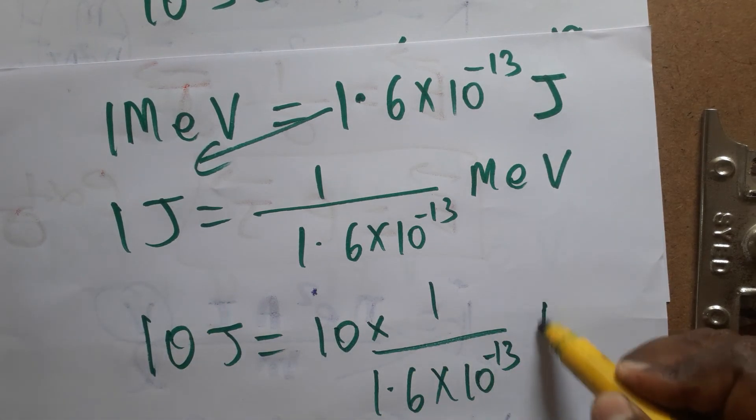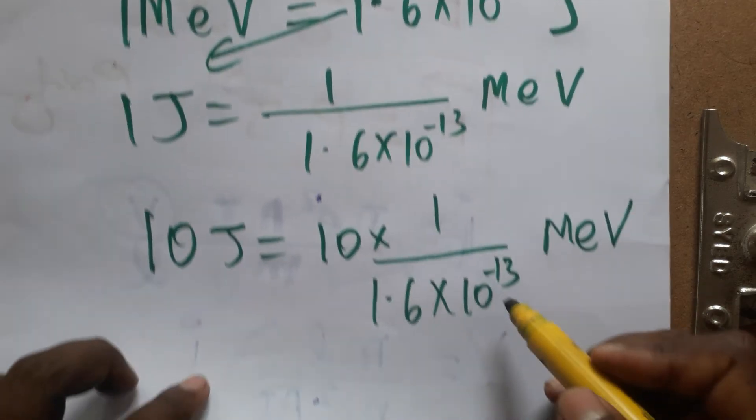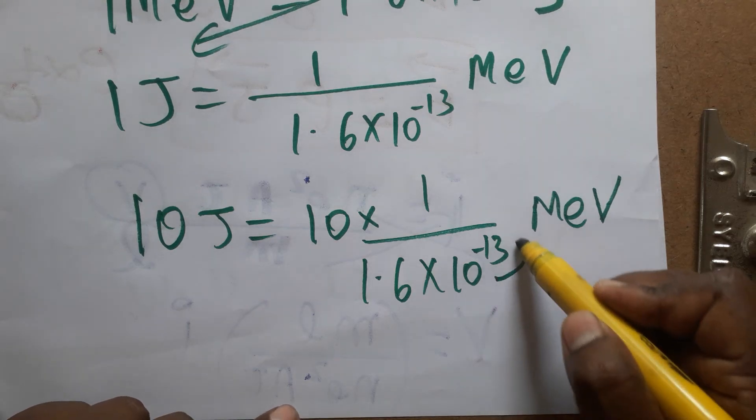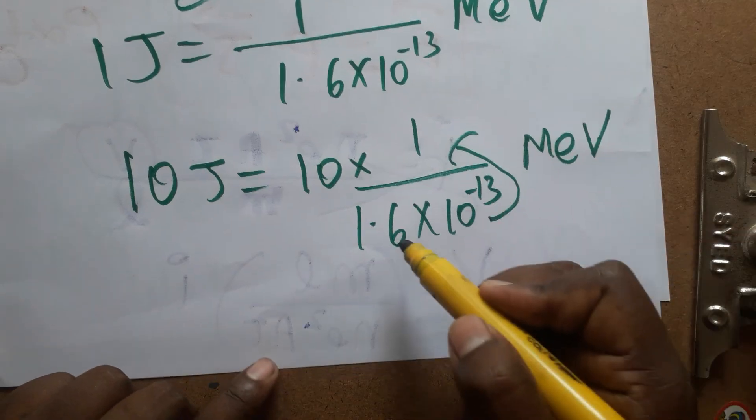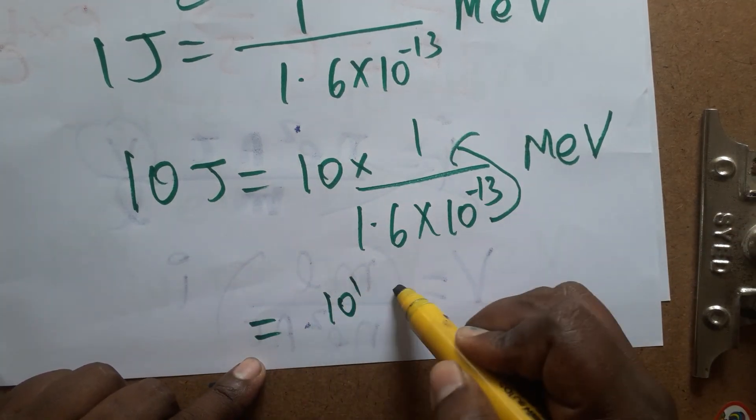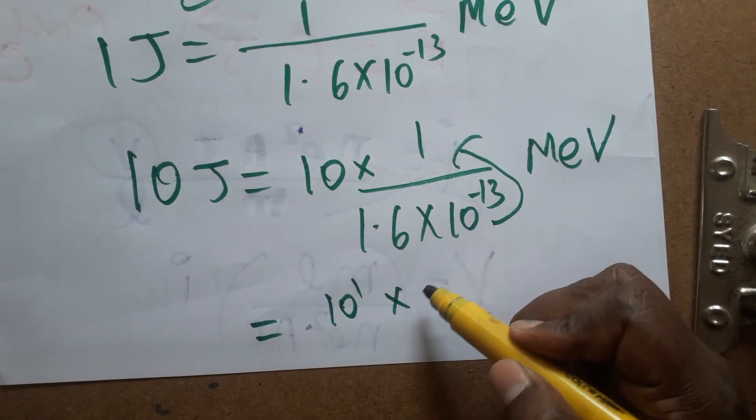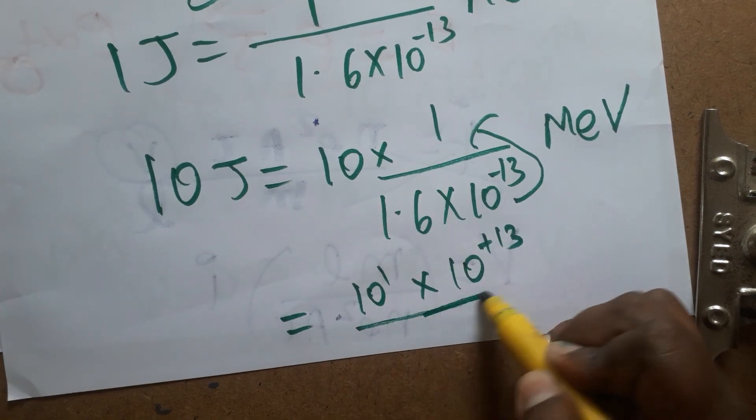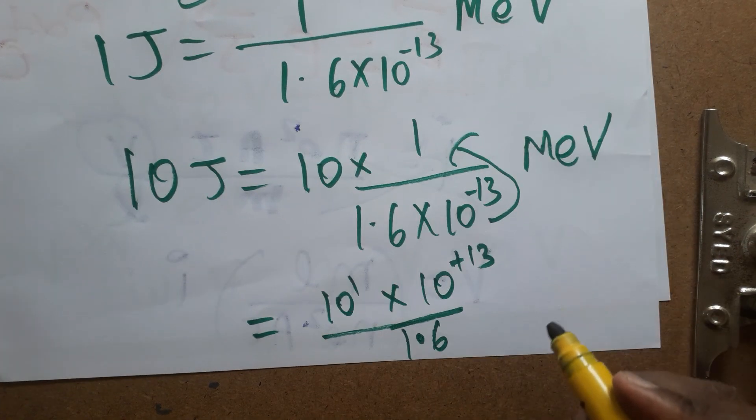Okay, so if you are taken 10 power minus 13 as a numerator, it's become as a plus 13. Okay, so 10 power 1, it's 10 power 1 and it's 10 power plus 13 divided by 1.6.